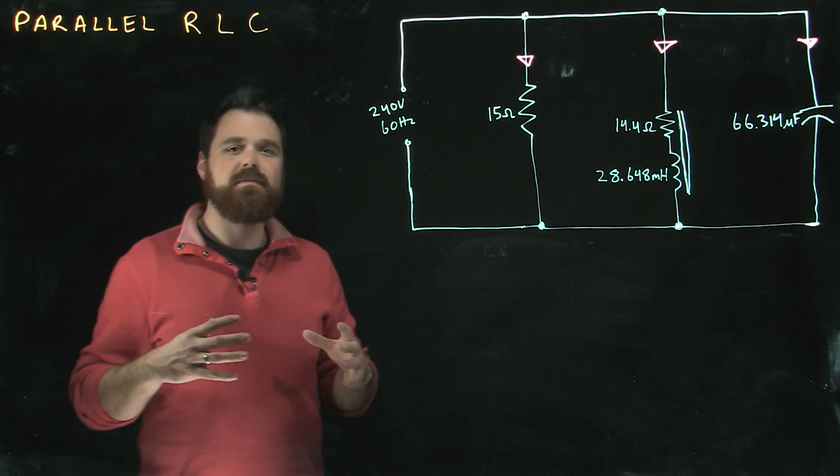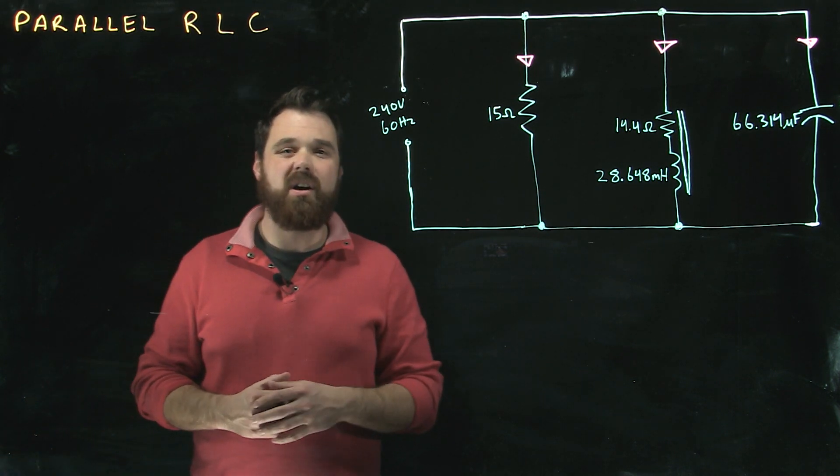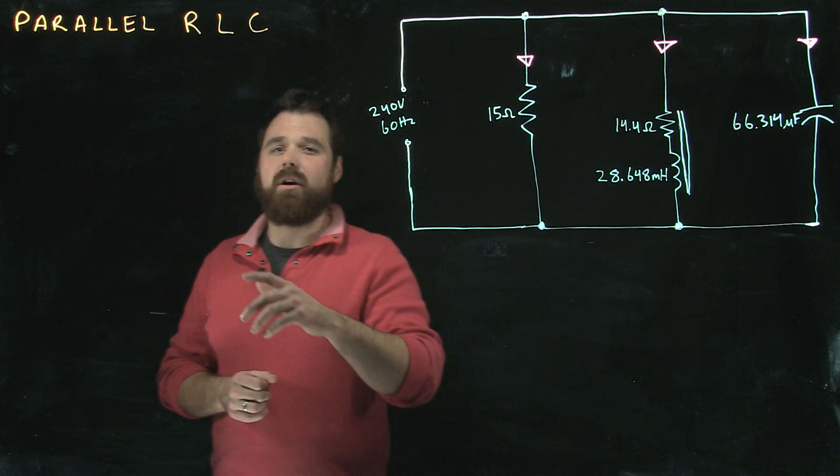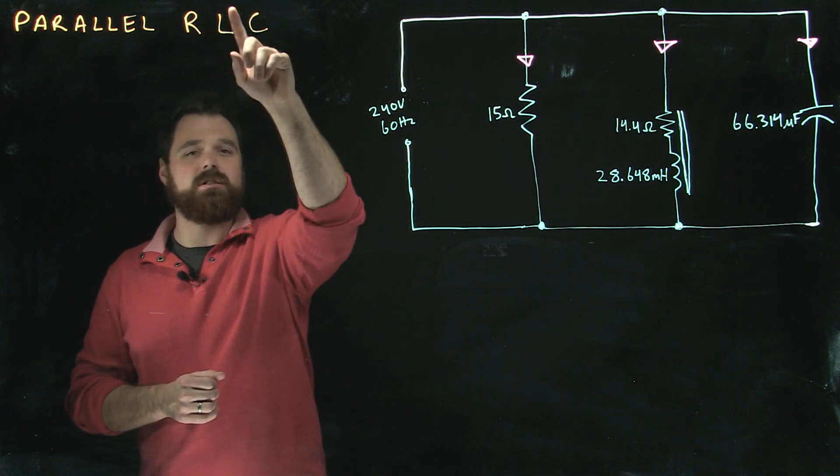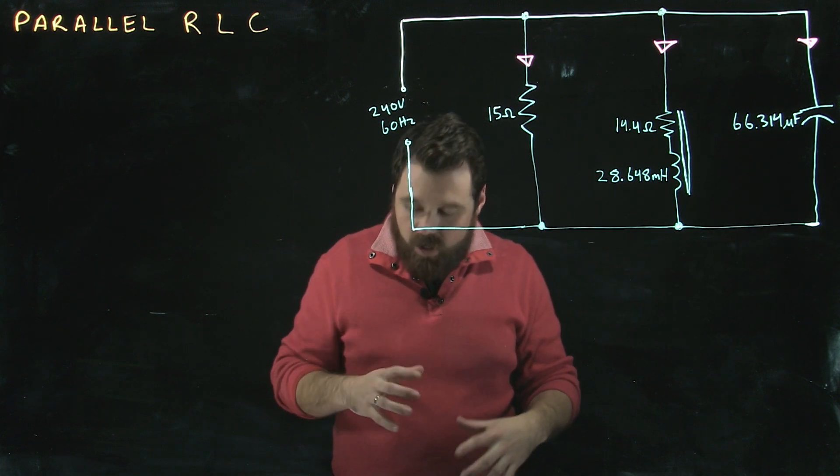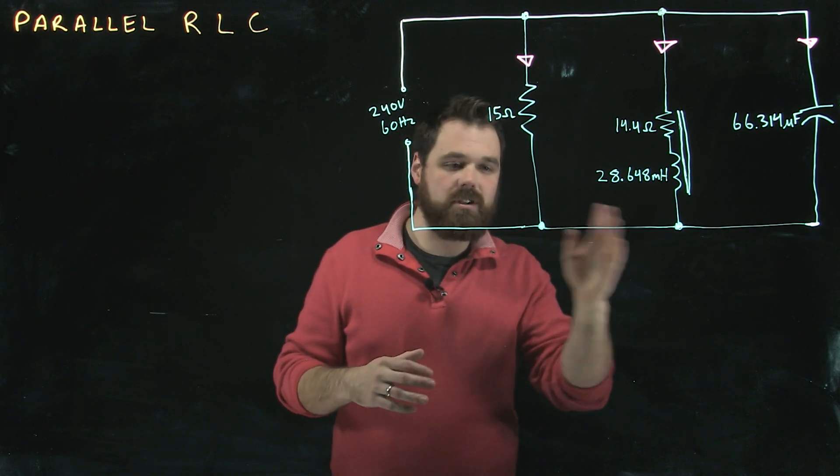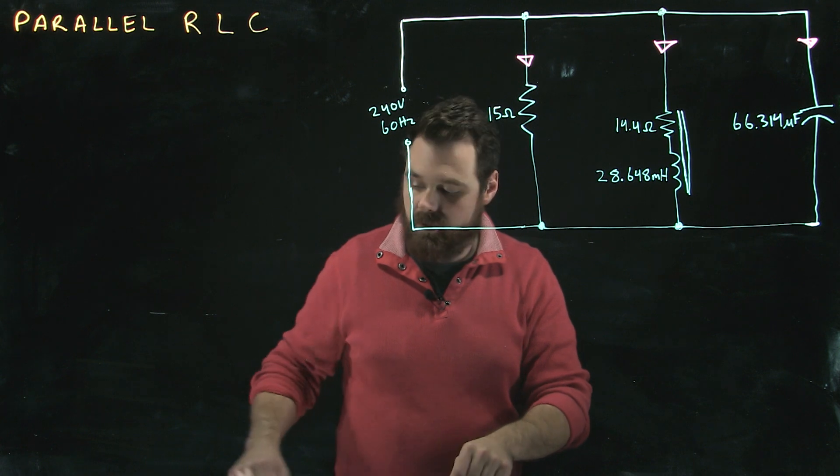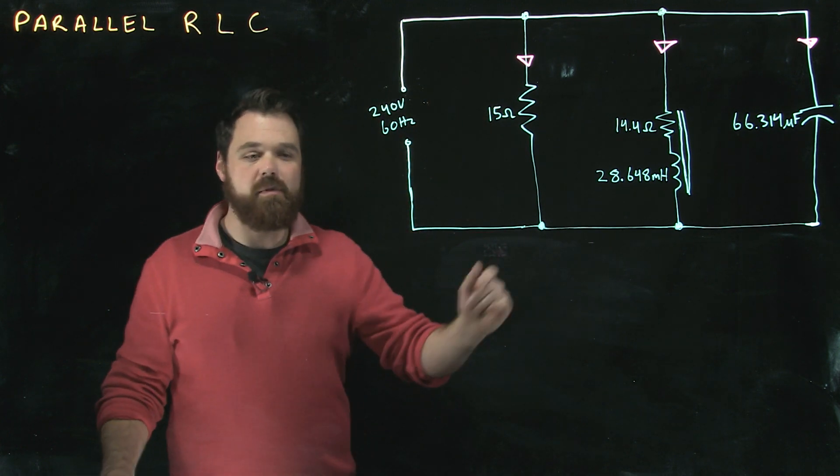Hi. I want to do a quick series of videos today about parallel RLC circuits. Parallel RLC circuits contain resistance, inductors, and capacitors. Not all parallel circuits are going to contain all three, but if we can solve one with all three, then we shouldn't have a problem solving one with only two.